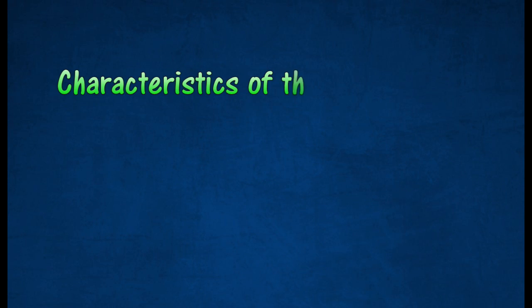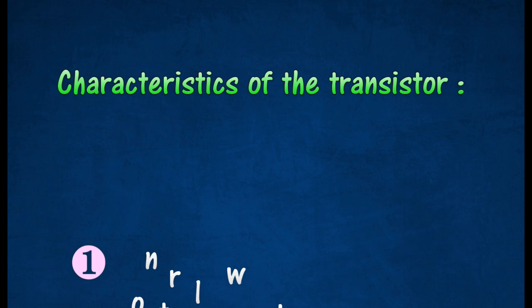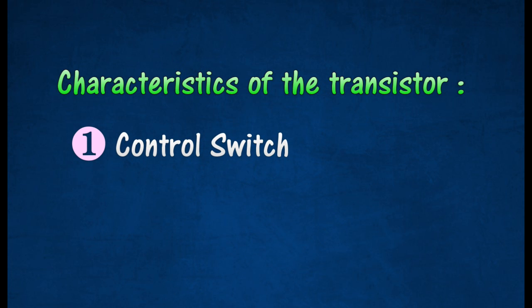The characteristics of the transistor can be summarized as follows. If there is a small current in the base emitter circuit, the transistor is switched on and conducts electricity. Thus, transistor can be used as a control switch.